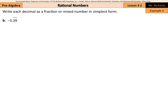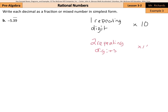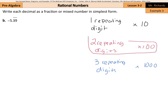Next, we look at what happens when we have a repeating decimal but two digits are repeating. When we had one repeating digit, we multiplied by 10. Now, when we have two repeating digits, we're going to multiply by 100. And if you ever get the challenge of three repeating digits, you're going to multiply by 1000. We have two repeating digits here, so we're going to use the same equation but this time multiply by 100.